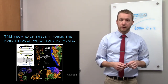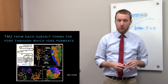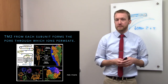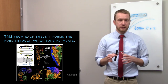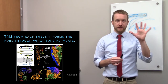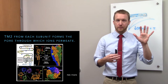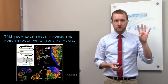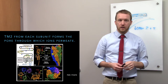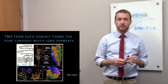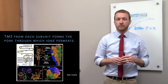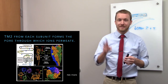The second transmembrane domain of each subunit forms the ion pore — different from voltage-gated channels where it is the fifth and sixth. Each subunit has four transmembrane domains. Different numbers of subunits come together to form different neurotransmitter receptors: five for acetylcholine, GABA, and glycine receptors; four for glutamate receptors; and three for ATP or purinergic receptors. P2X receptors are dimers, but all others discussed here have four transmembrane domains with the second forming the pore.